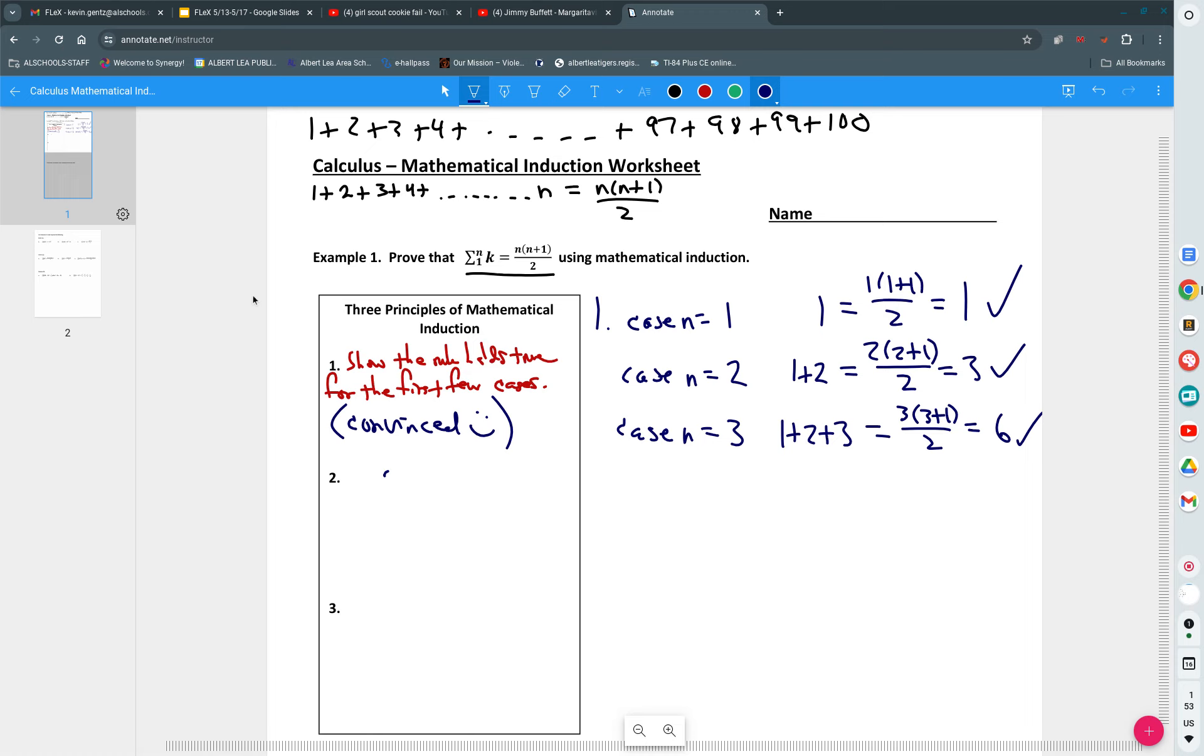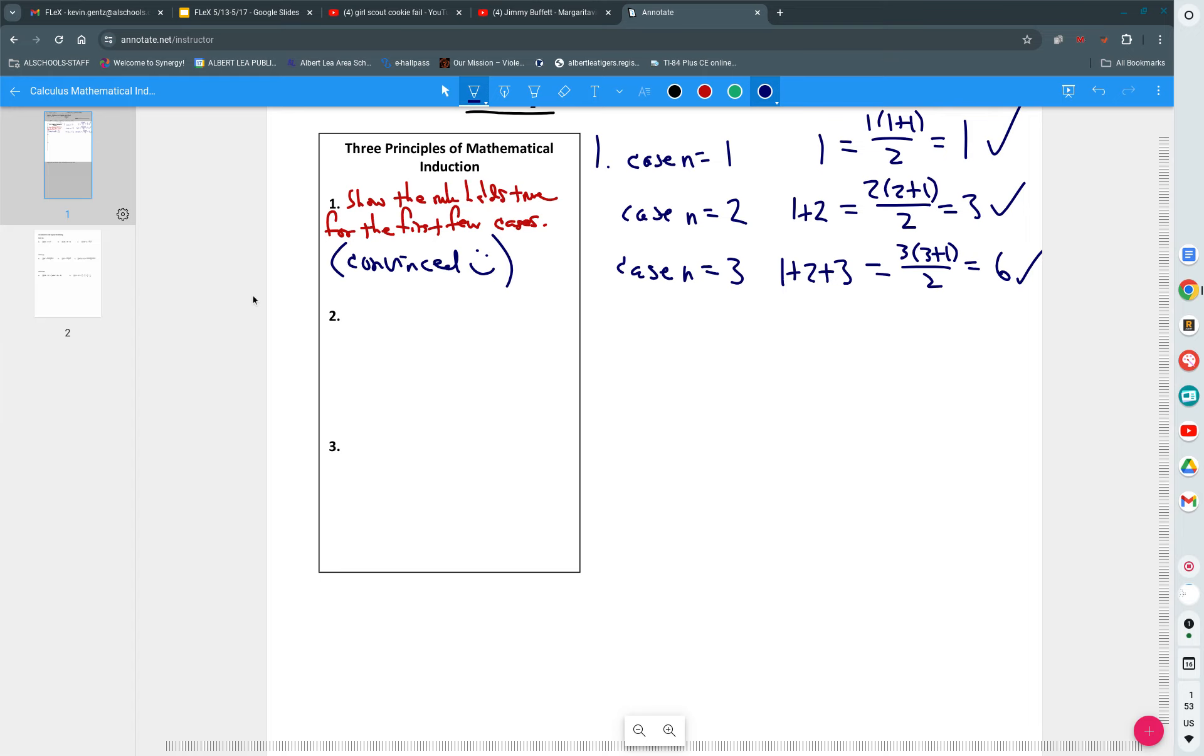Second step of math induction is as follows. I just asked Bracken if he thought it was going to work. He said yeah. So instead of showing it, we're going to assume. Assume the rule holds true for case n equals k. And think of k as like the next few in order here, like 4, 5, 6, 7. Don't think of k as any just big number. Think of it as the next few cases. We're going to assume it works for the next few.